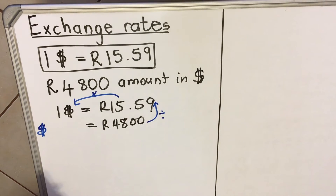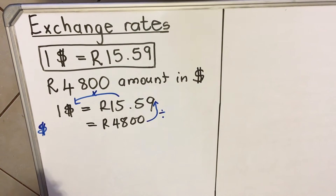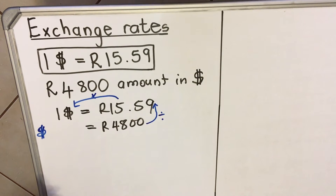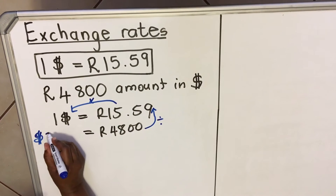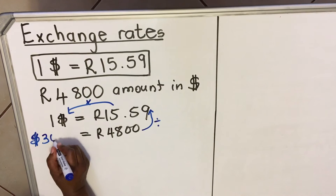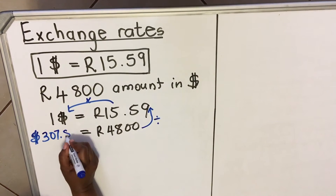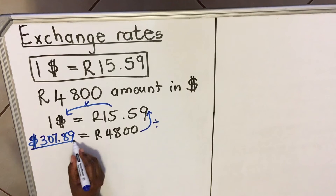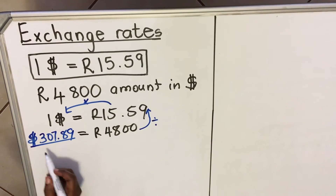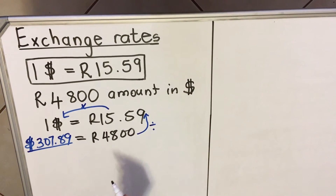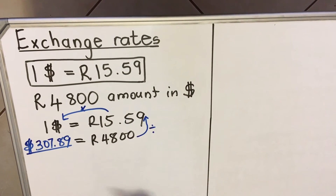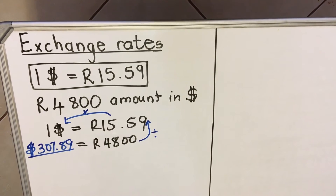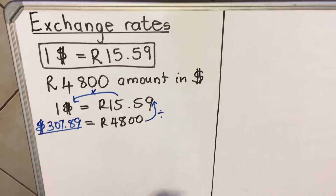4800 divided by 15.59 multiplied by 1 gives you 307 dollars and 89 cents. When writing your answer, underline it so that the person marking your script can clearly see the answer.